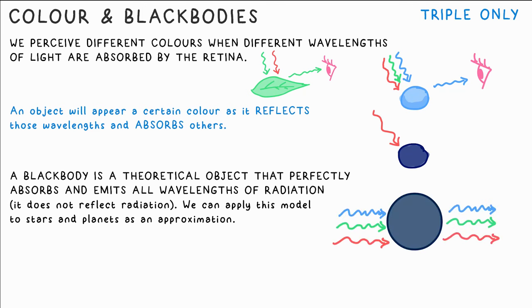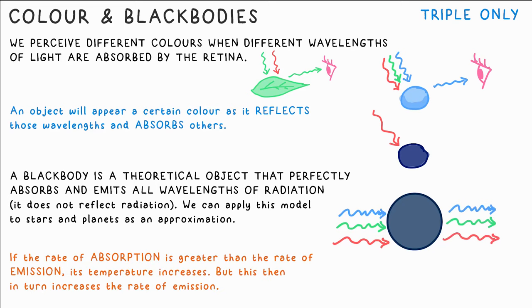A black body is an object that perfectly absorbs and emits all wavelengths of radiation. While there's no such thing in reality, it's a useful concept that we can apply to some objects like stars or planets. If a body or object absorbs radiation at a greater rate than it's emitting it, its temperature will increase. But if the temperature increases, that also means that it starts emitting radiation at a greater rate too.